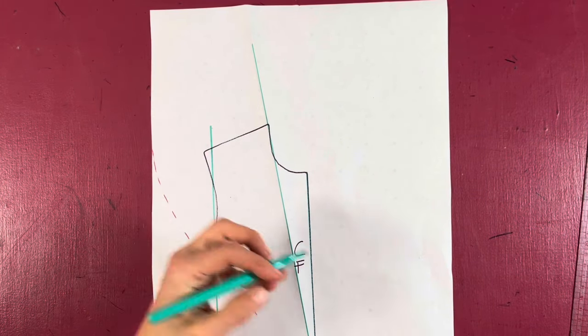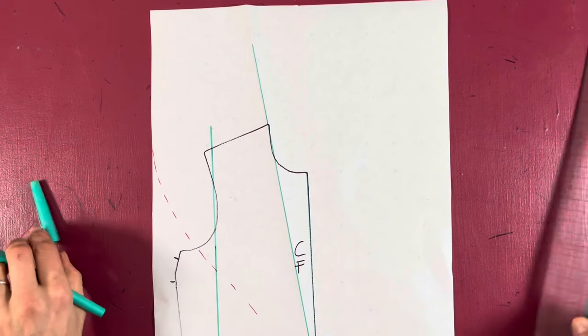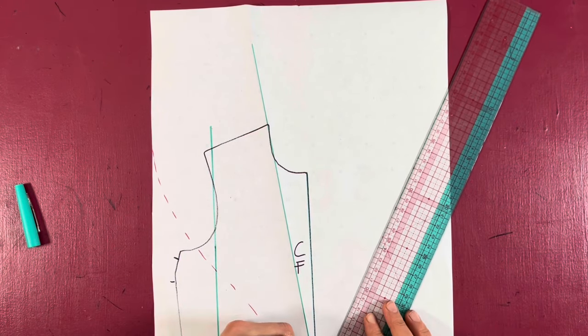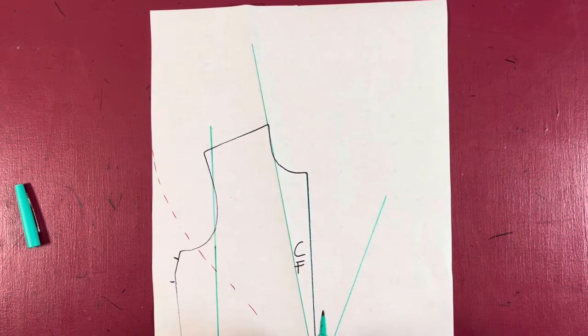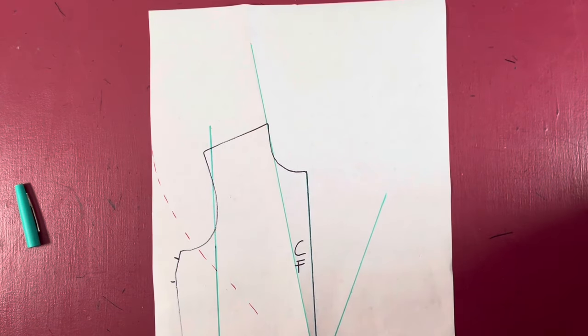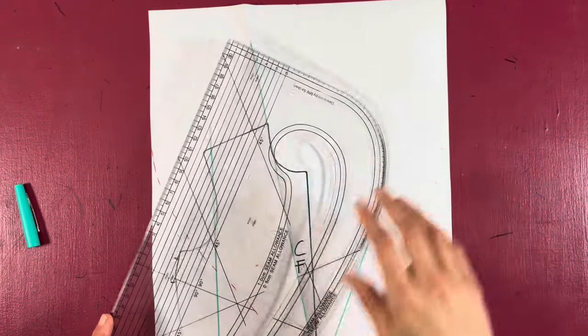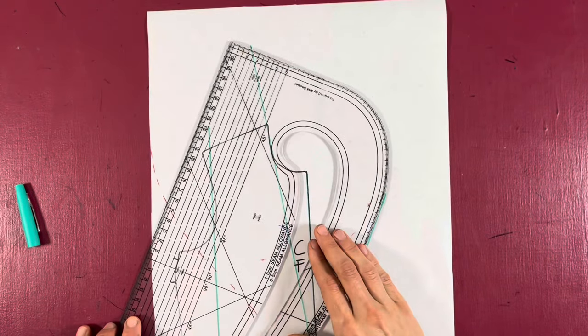and here I can see that it goes way past my shoulder point, so that's exactly what I'm aiming for. I can now draw in a straight line, and then you can use your pattern master to draw in your curve.